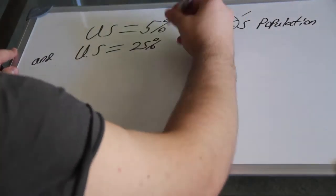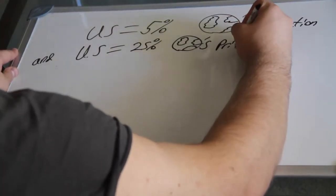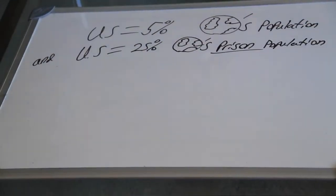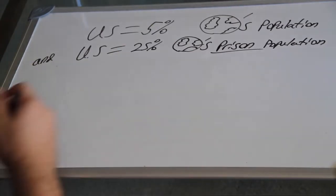The US accounts for 5% of the world's population, yet 25% of the world's prisoners. Since 1980, the US prison population has grown by nearly 800%.